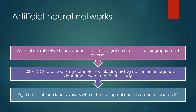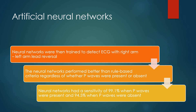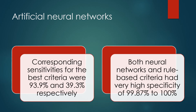11,009 ECGs recorded using computerized electrocardiographs in an emergency department were used for the study. Right arm–left arm lead reversals were then computationally created for each ECG. Neural networks were trained to detect ECGs with right arm–left arm lead reversal. The neural networks performed better than rule-based criteria regardless of whether P-waves were present or absent. Neural networks had a sensitivity of 99.1% when P-waves were present and 94.5% when P-waves were absent. Corresponding sensitivities for the best criteria were 93.9% and 39.3%, respectively. Both neural networks and rule-based criteria had very high specificity of 99.87% to 100%.